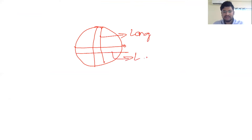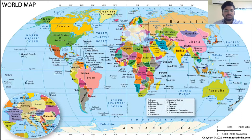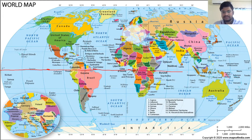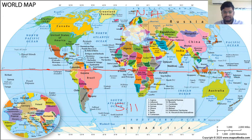The next topic is the location of Telangana on the India map. You should know the basic concepts of latitude and longitude. Latitudes are lines drawn parallel to the equator, and longitudes are lines drawn from pole to pole. The zero degree latitude divides the earth into two hemispheres: the northern hemisphere and the southern hemisphere.